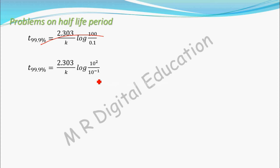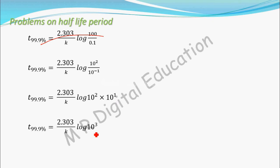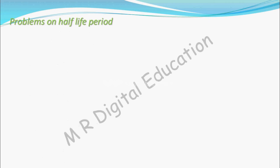Take 10 to the power minus 1 upside: log of 10 to the power 2 into 10 to the power 1. That gives log of 10 to the power 3, which you can write as 3 log 10. So T99.9% equals 2.303 by K into 3 into log 10. The base of this log is 10, so log 10 to the base 10 is 1. Multiplying 3 and 2.303 gives 6.909 by K. Call this equation 1.